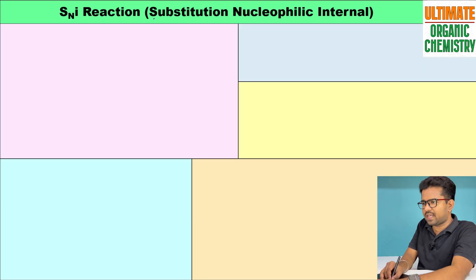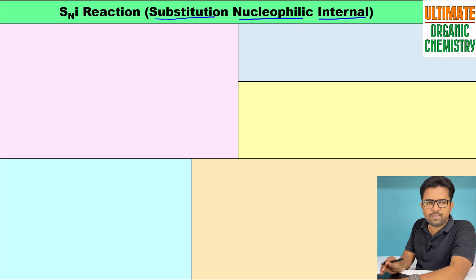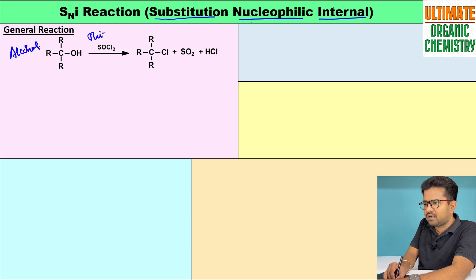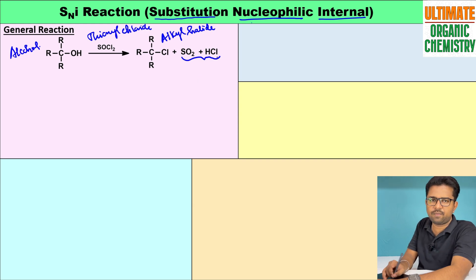First, let me explain the term SNI: S stands for substitution, N stands for nucleophilic, and I stands for internal. In the general SNI reaction, an alcohol is treated with thionyl chloride to form an alkyl halide as the product. The byproducts are sulfur dioxide and hydrochloric acid.